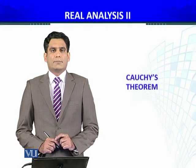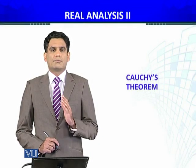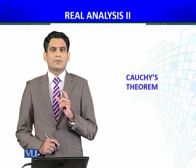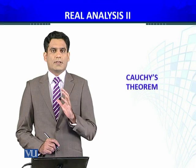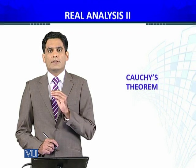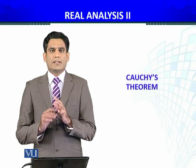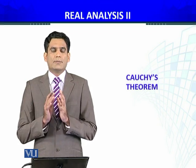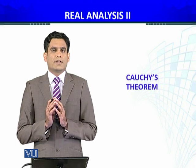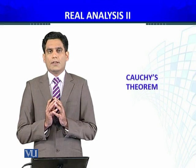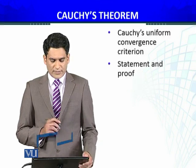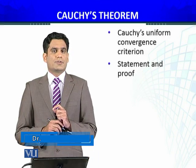Analysis 1 के course में हमने discuss किया था कि if a sequence of real numbers is convergent then Cauchy criteria satisfy होती है। एक criteria था: a_n minus a_m, whenever n greater than m, यह less than epsilon होगा। Similarly, for sequences of functions, we have the Cauchy criterion and Cauchy theorem for uniform convergence। इसको हम अब discuss करेंगे — Cauchy's uniform convergence criteria।